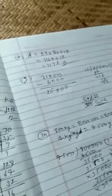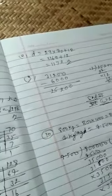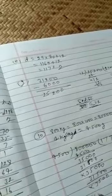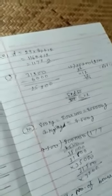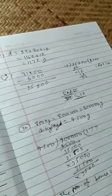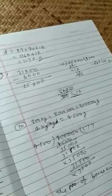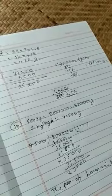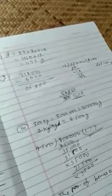The number of boxes can be loaded in van equal to 177. This is my answer.